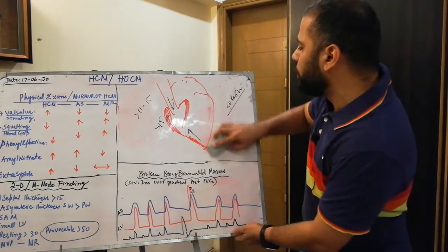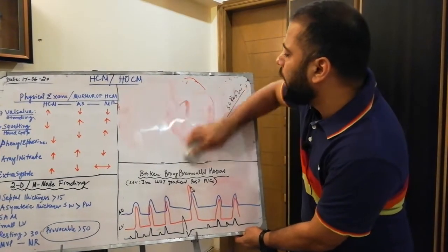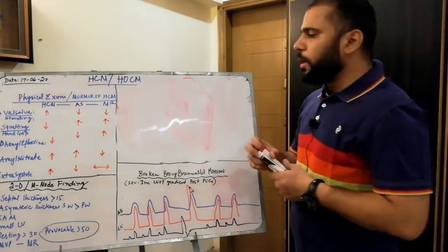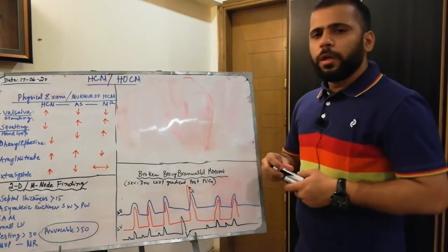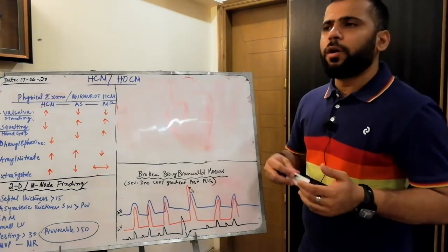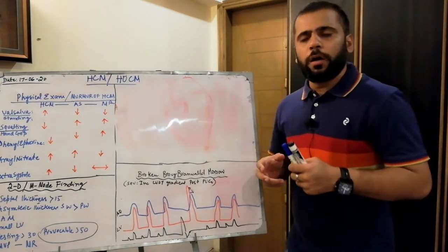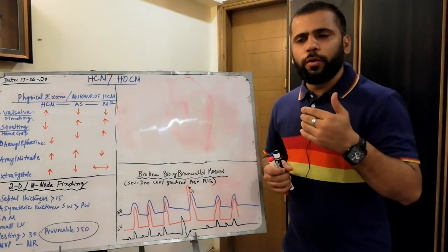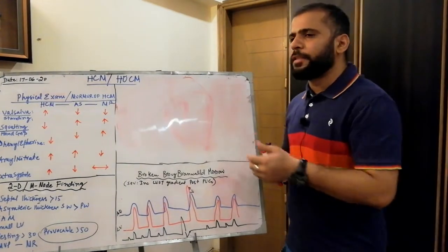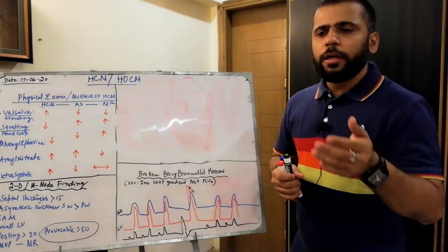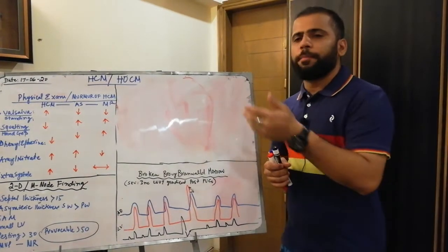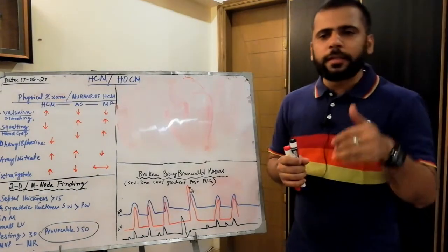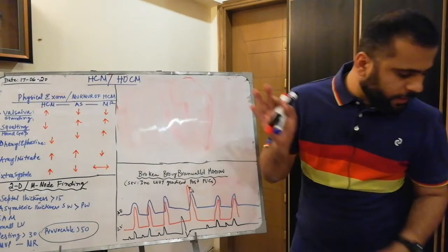The next investigation you can perform is MRI, to check gadolinium enhancement in your patients. This is one of the indications when you are risk stratifying a patient with HCM — for primary prevention you need to get the MRI done. We will discuss the indications of ICD in HCM patients later on.